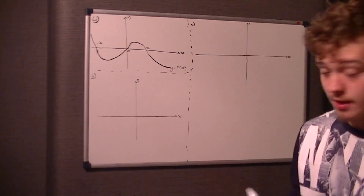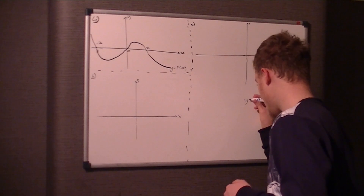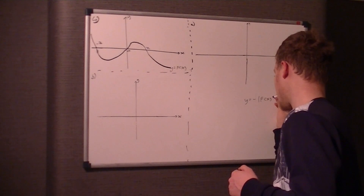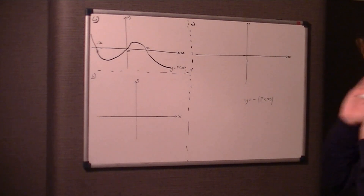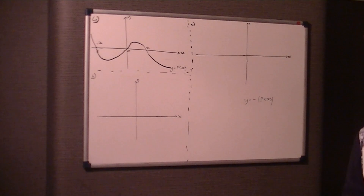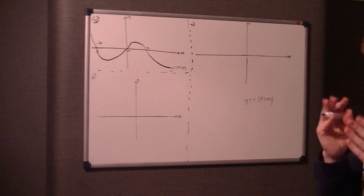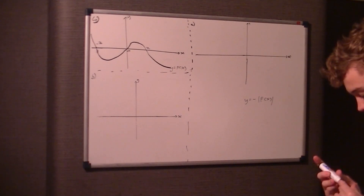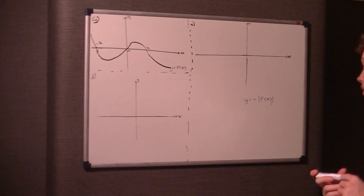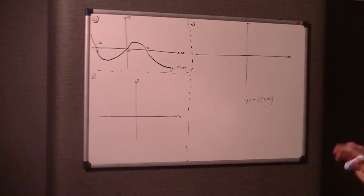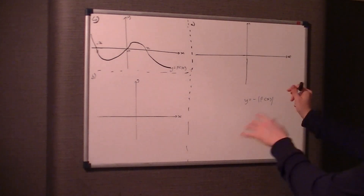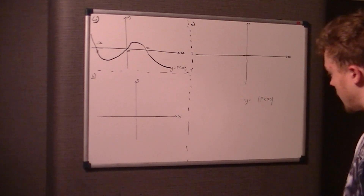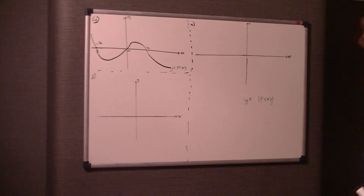Part A asks us to find y equals the negative of the modulus of f(x). That means a negative sign and then two modulus bars on either side of f(x). That's not just the x bit — that's the whole function of x. Let's break it down before we start. We break this down in steps. So y equals the modulus of f(x).